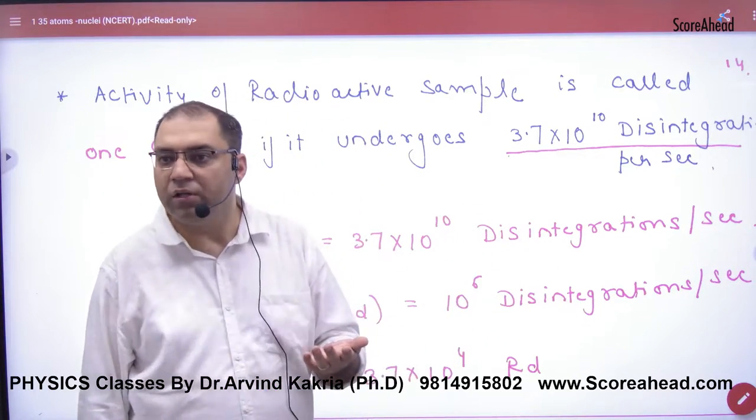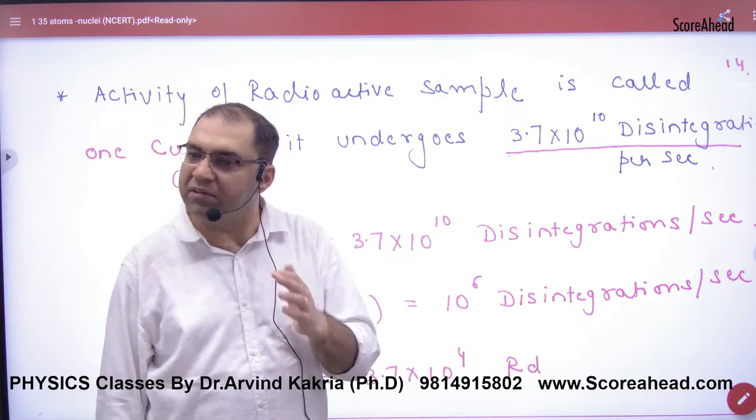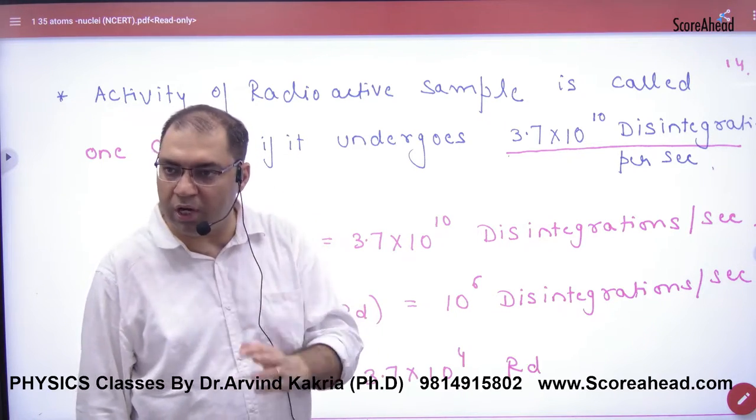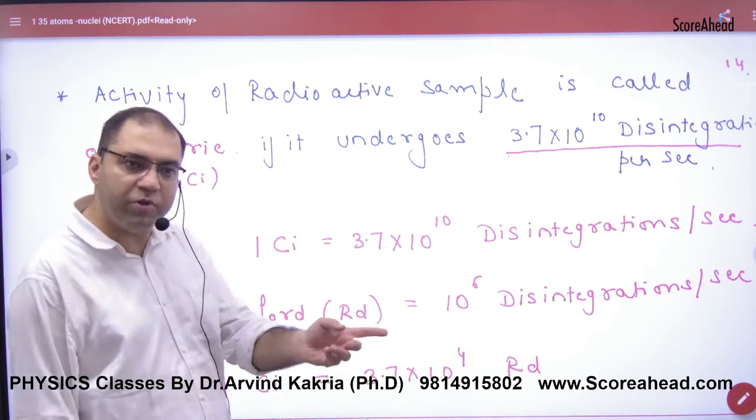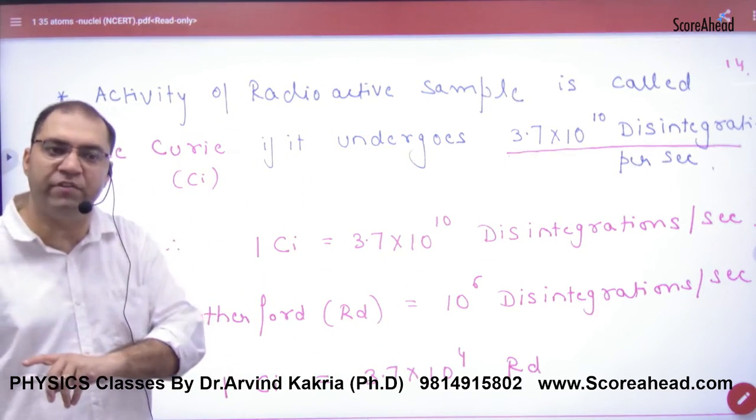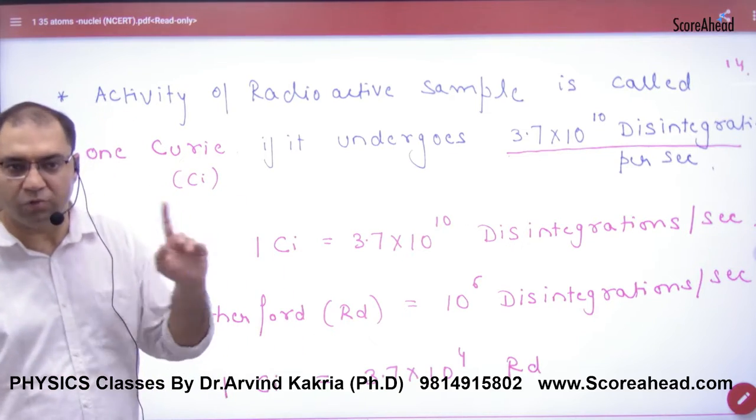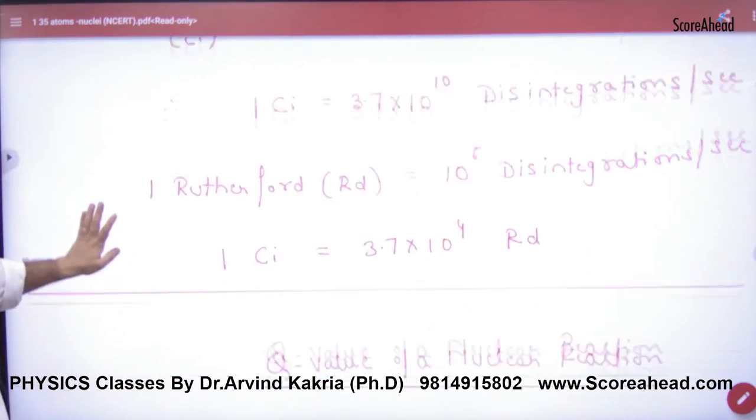Because the activity units are disintegrations per second. If curie is given, then you have to convert. If Rutherford is given, then you have to convert. So if there is anything between both, then disintegrations per second. So you have to remember this factor. Clear here?